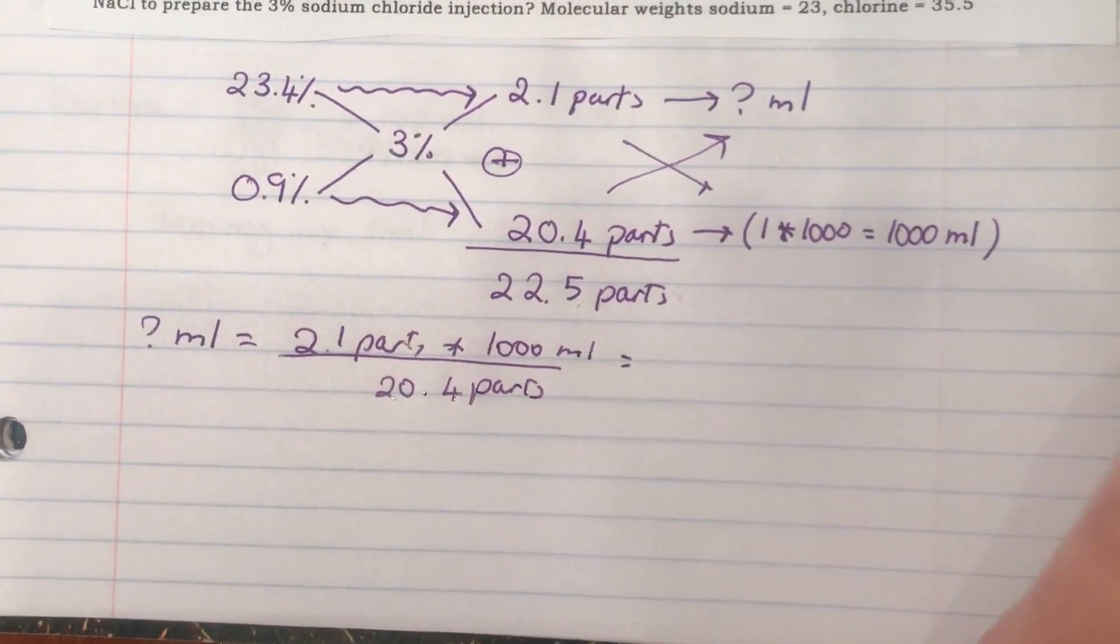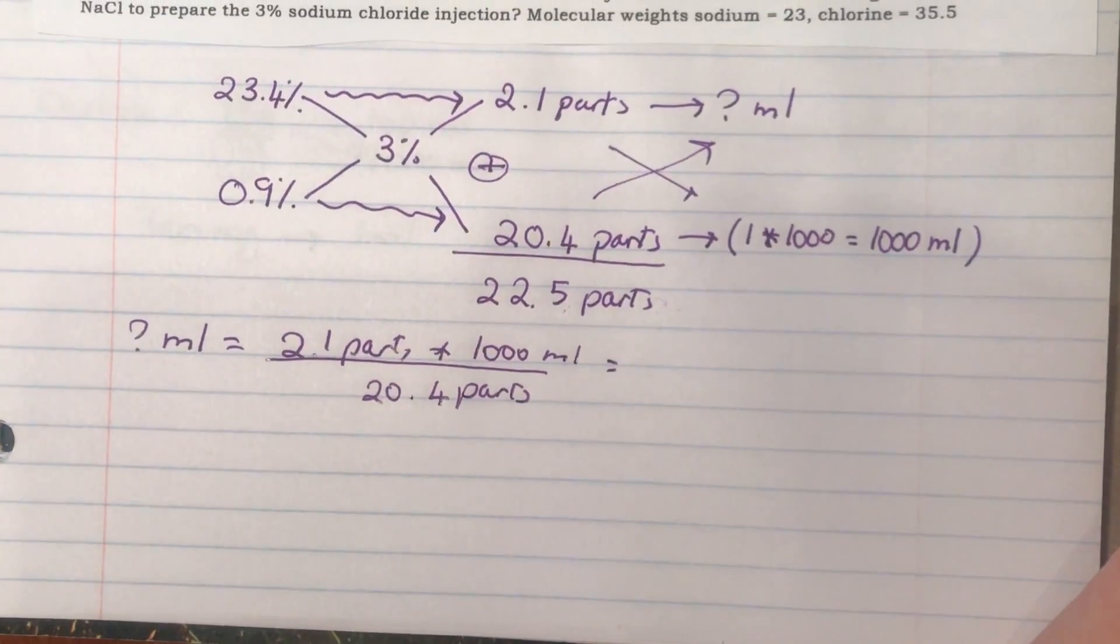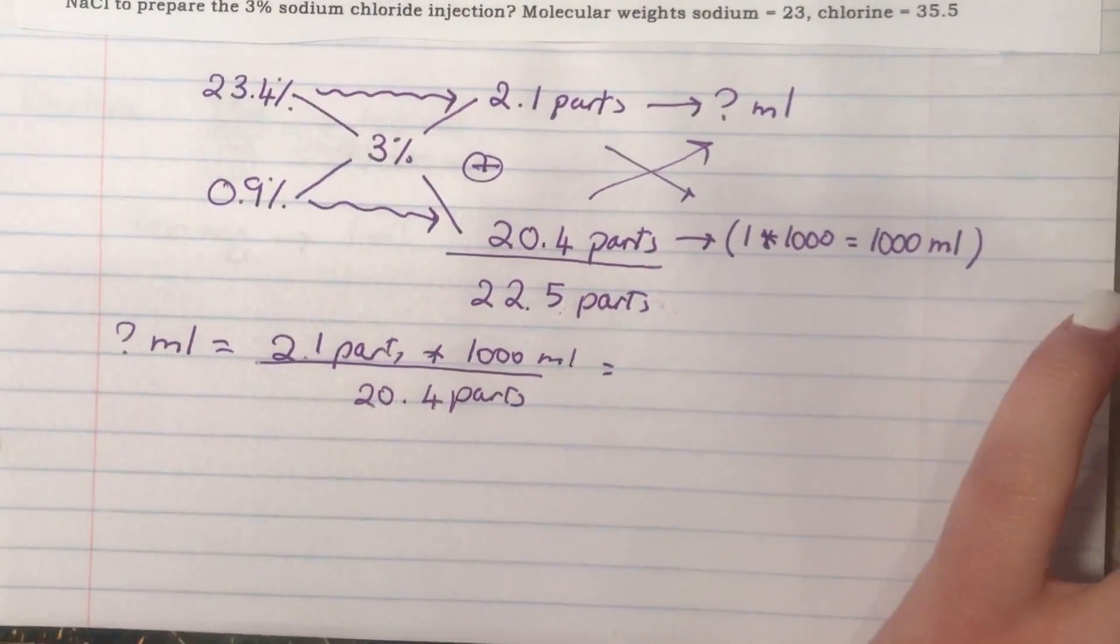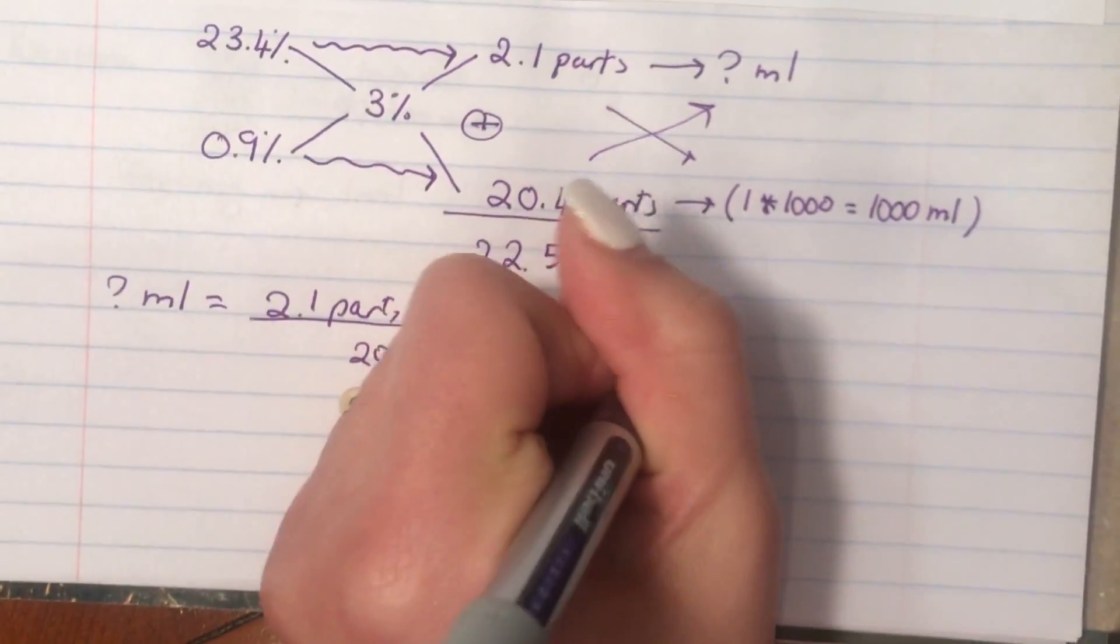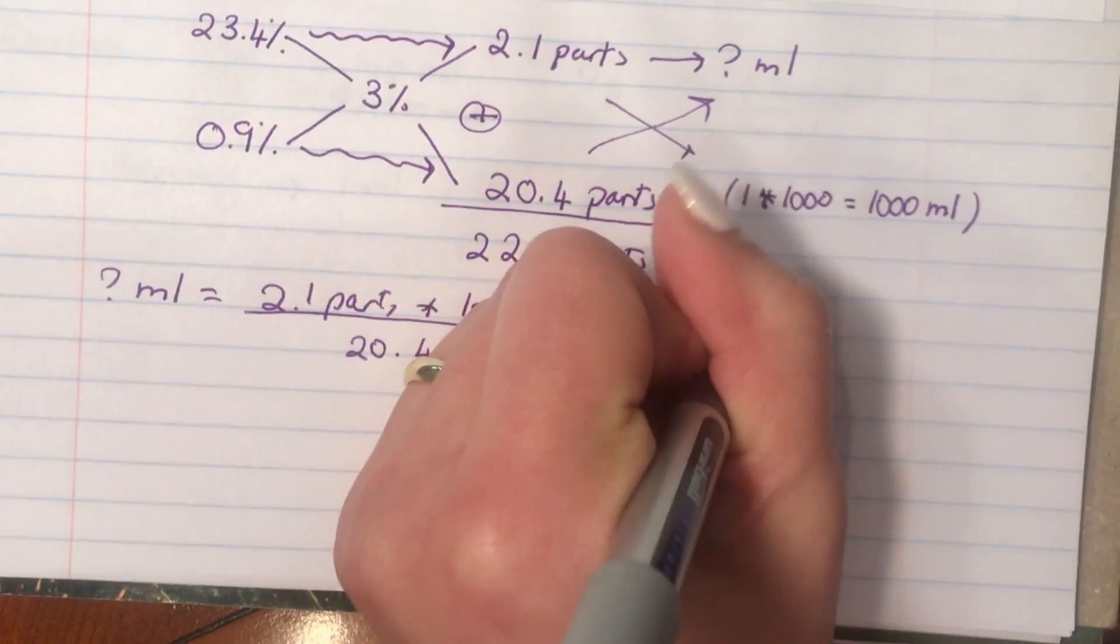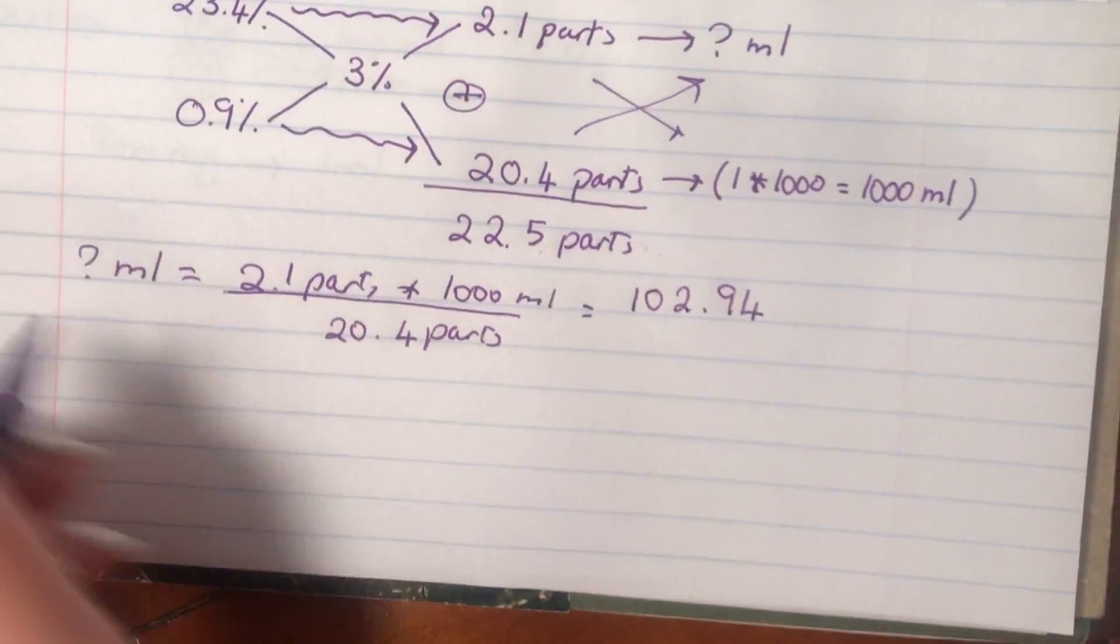We'll calculate that: 2.1 times 1000 divided by 20.4. That will give you 102.94 mL.